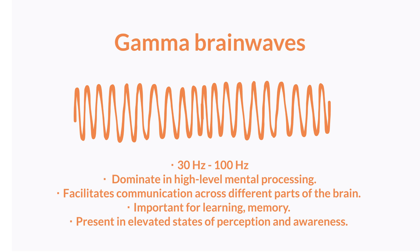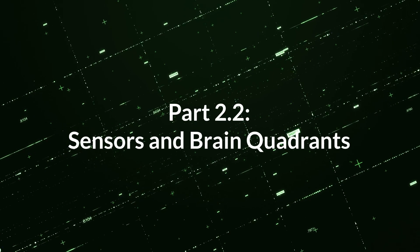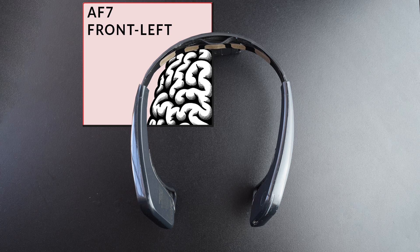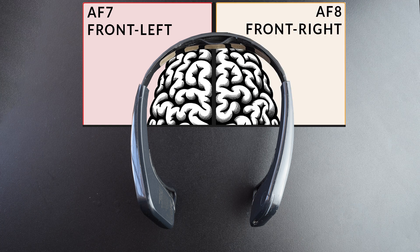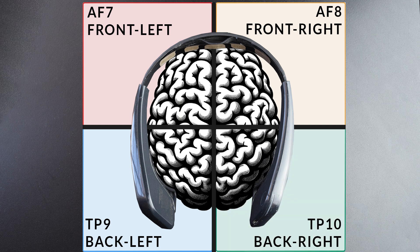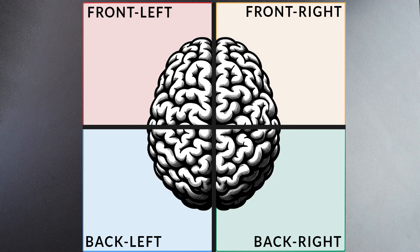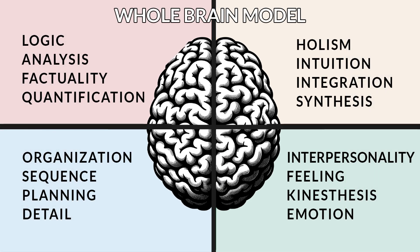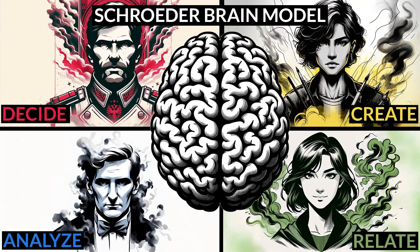Gamma brainwaves allow neurons from different parts of the brain to share information and combine efforts efficiently. They are also present during elevated states of consciousness. The Muse headset has four main sensors: AF7 front-left, AF8 front-right, TP9 back-left, and TP10 back-right. Having these four sensors is useful because it allows us to divide our brain activity into four quadrants, giving us a chance to compare our brainwave activity to models such as Herman's whole brain model or Schroeder's brain model.